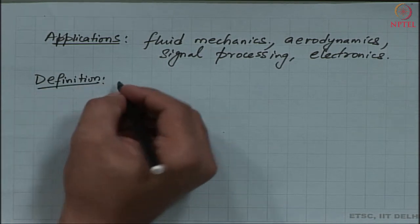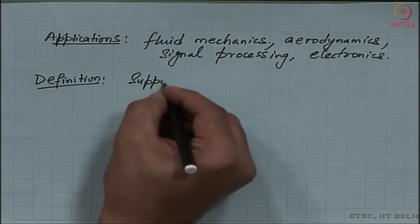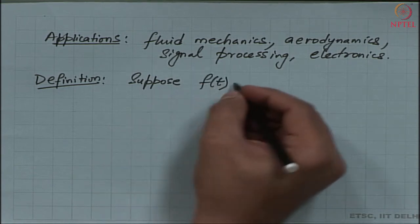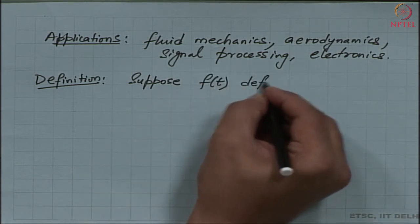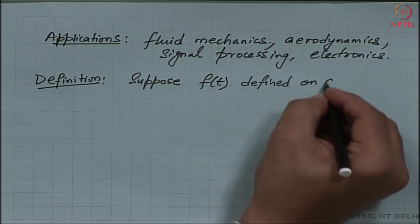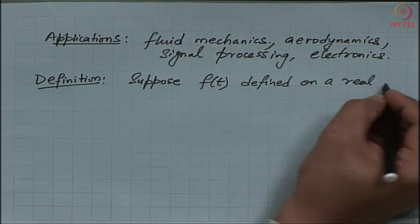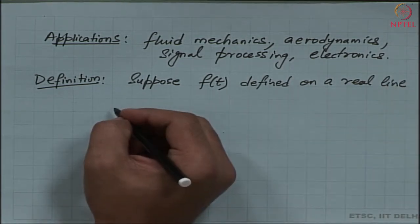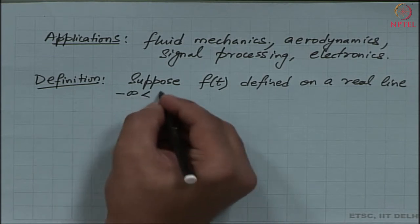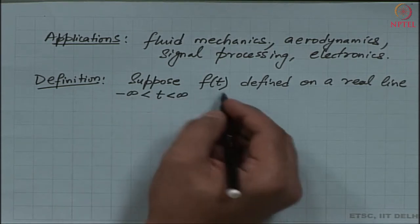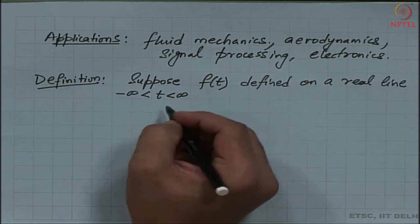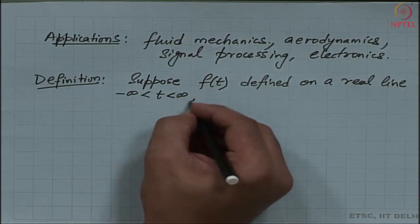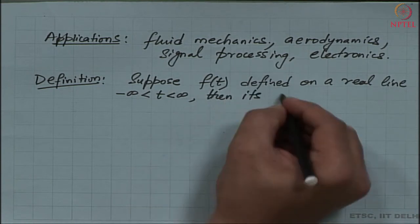Let us look at what the Hilbert transform of a function is. I am going to assume a piecewise continuous function f(t) defined on a real line. I start with the function being real and take the argument t to be any value on the real axis.